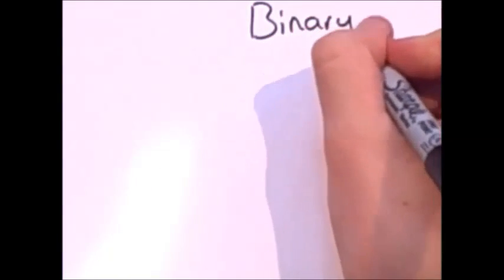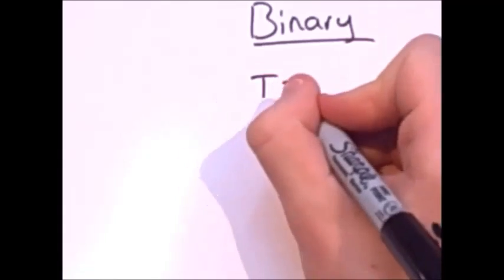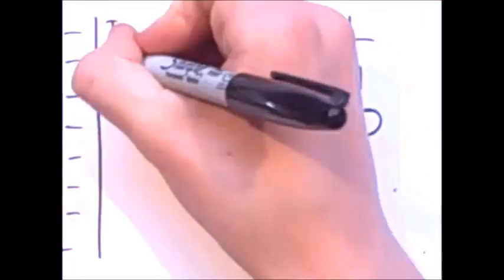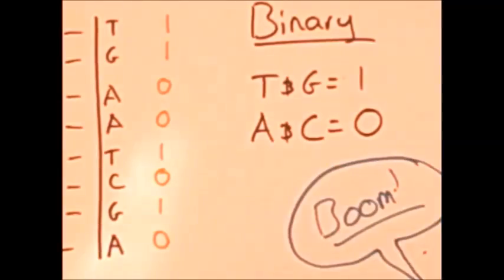They converted each base into representing a binary value. T and G were 1, and A and C are 0. The 700 terabytes of data were stored in 1 gram of DNA, too.